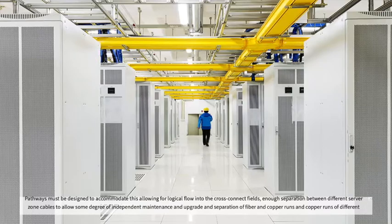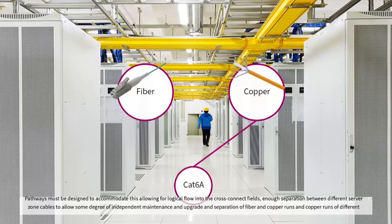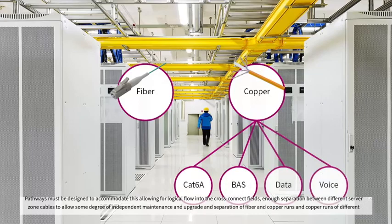Pathways must also provide enough separation between different server zone cables to allow some degree of independent maintenance and upgrade, and separation of fiber and copper runs, and copper runs of different types, such as CAT 6A and lower specification BAS and data voice cables.